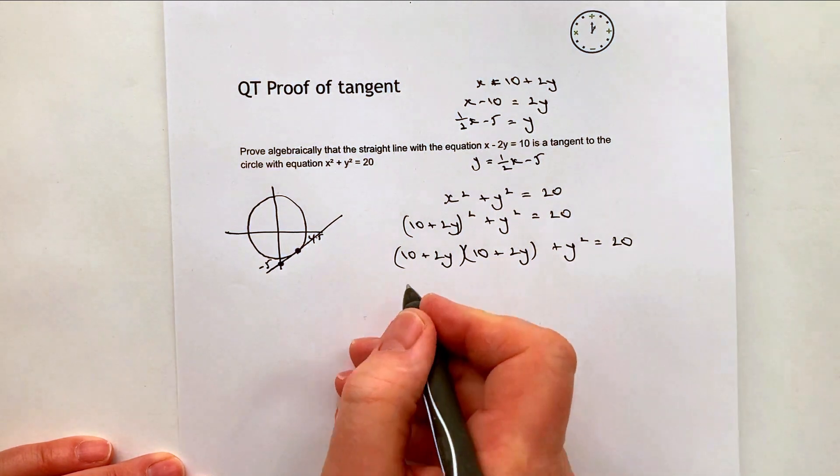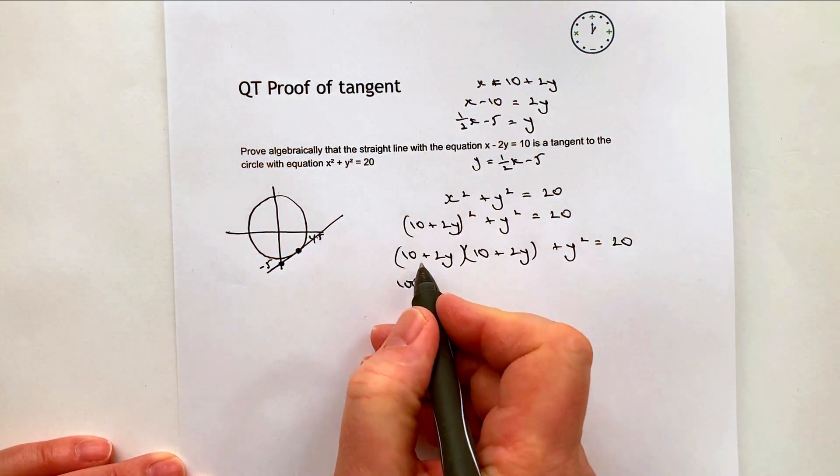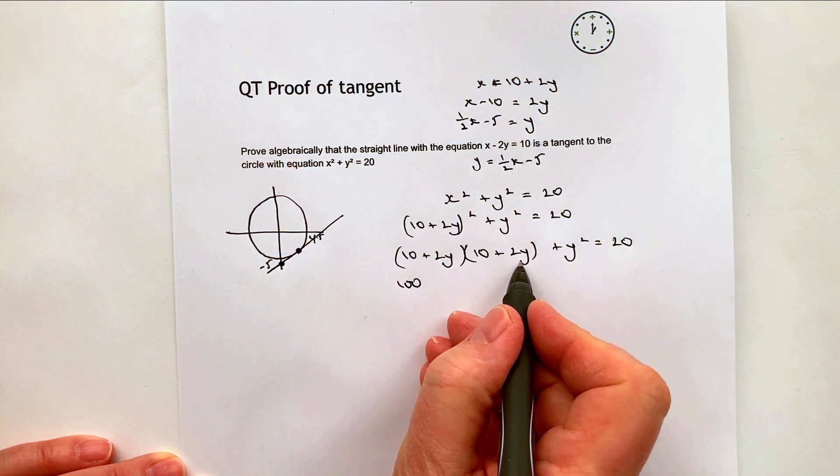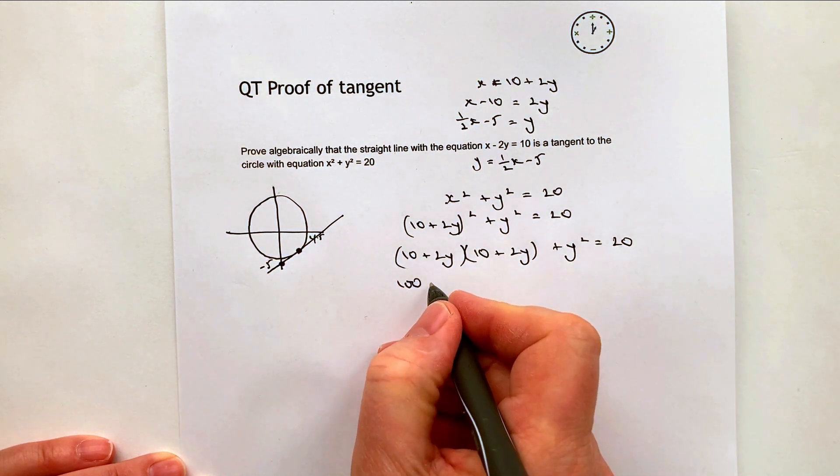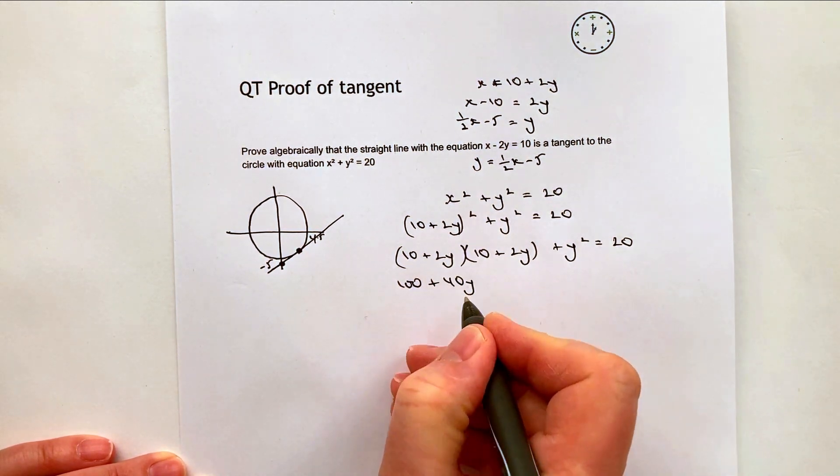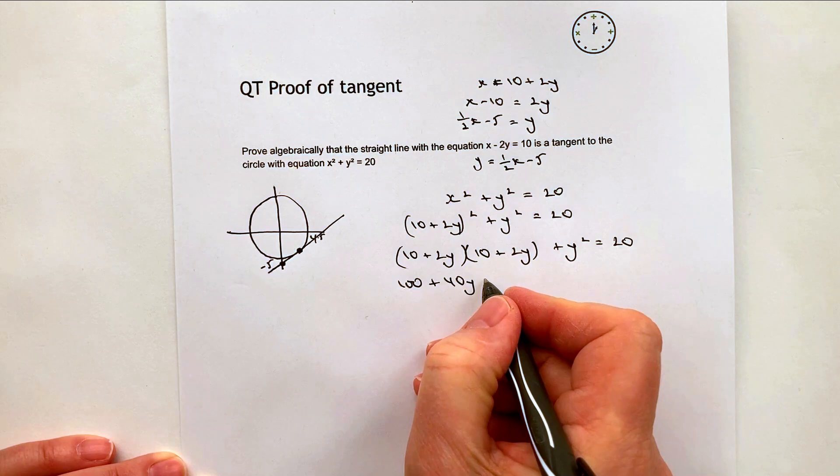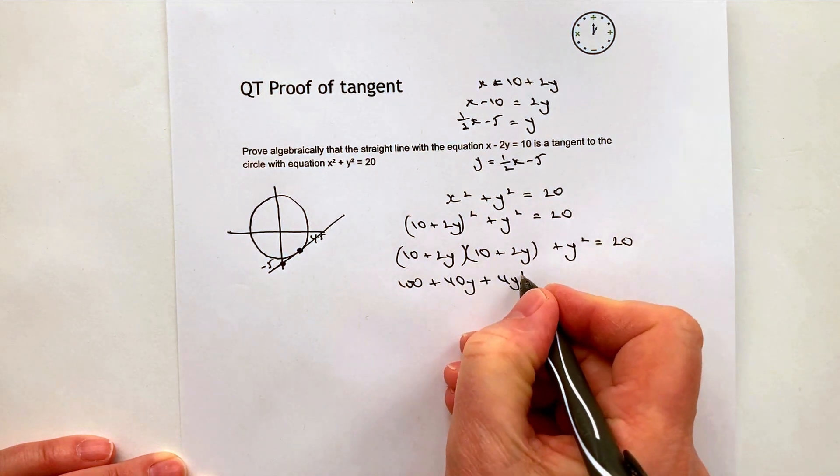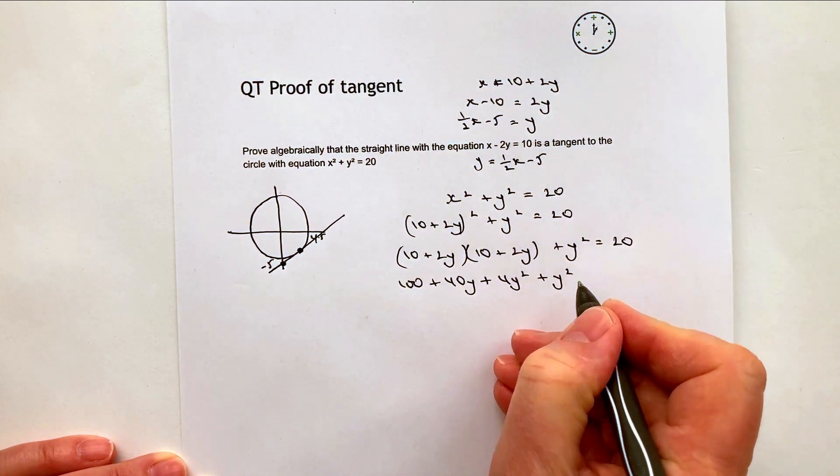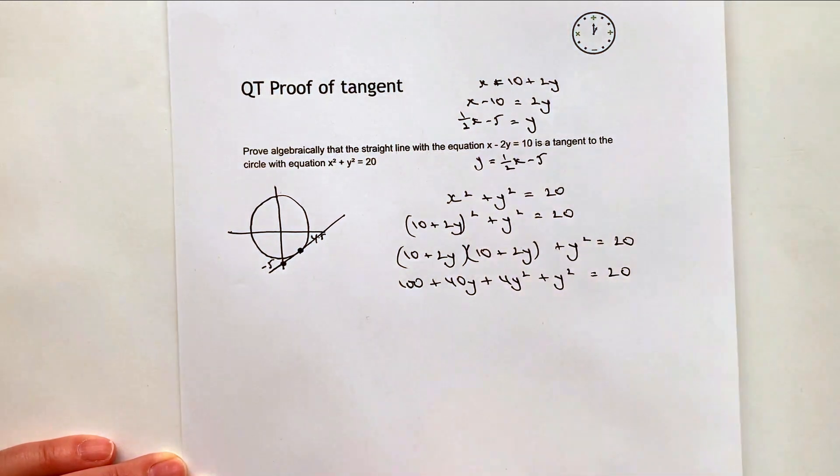So I've got 10 times 10, which is 100. Then I've got plus 20y plus 20y, that's plus 40y. And then 2y times 2y is plus 4y squared plus the y squared equals 20.